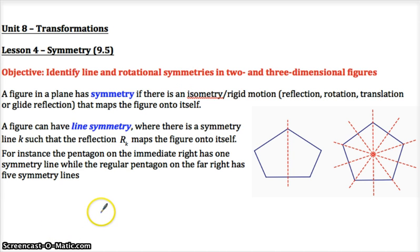A figure in a plane has symmetry if there is some type of isometry - by this time we've studied these kind of isometries: reflection, rotation, translation, or glide reflection. We haven't done that yet, but that's not going to come up actually today.